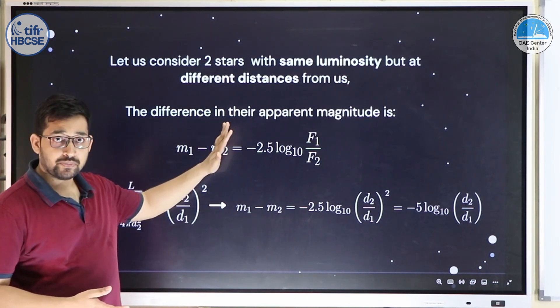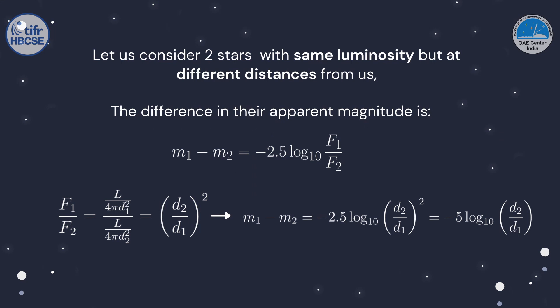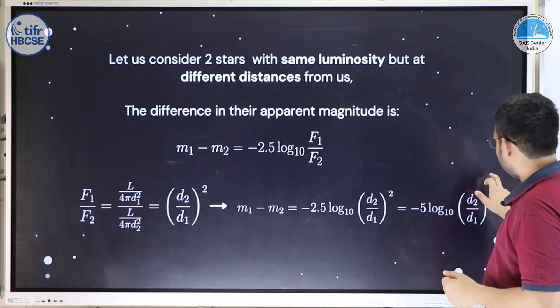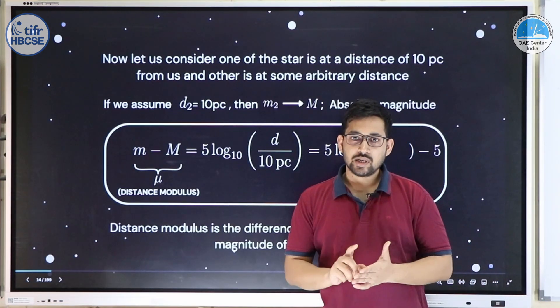Now consider two stars with the same luminosity but at different distances. Using the relative magnitude equation m₁ − m₂ = −2.5 log₁₀(F₁/F₂), and substituting F = L/(4πd²), the luminosity cancels, leaving: m₁ − m₂ = −5 log₁₀(d₂/d₁). This gives a relationship between magnitude difference and distance ratio.